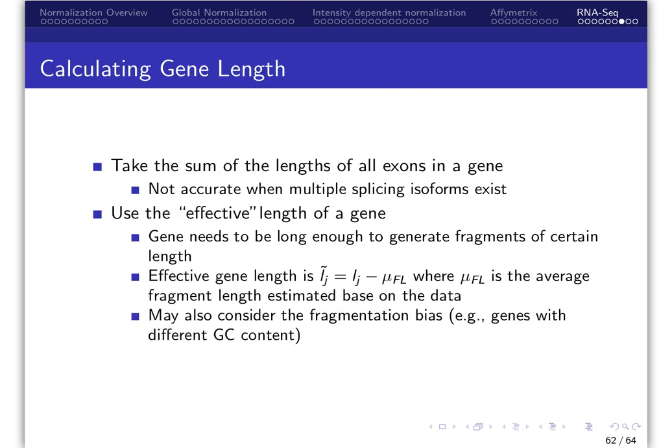Calculating gene length is not as straightforward as you may think. You could take the sum of the length of all exons, but when there are multiple splicing isoforms, one gene may have different exons included, so different isoforms are shorter than the sum of all exons. Some suggest taking median or average of all isoforms. If you are interested in comparing within gene, summing exons is probably okay.